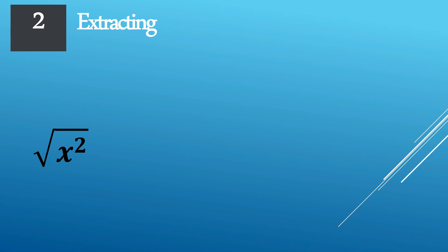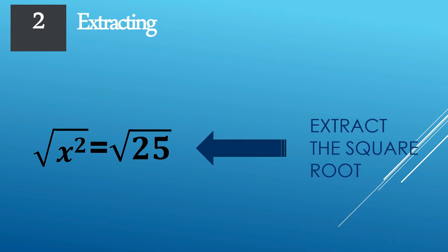The next step is isolating the variable x. We need to isolate x, and since both sides of the equation have perfect squares, we can extract the square roots. x squared is a perfect square which, when extracted, becomes x. And 25 is also a perfect square — extracting it gives us 5.